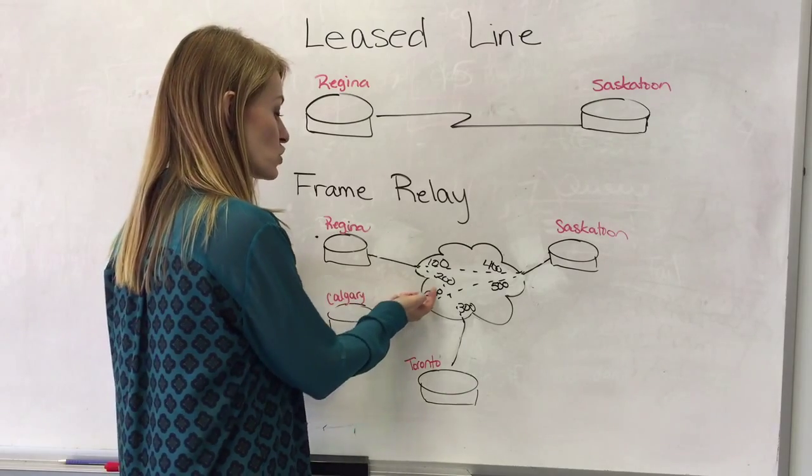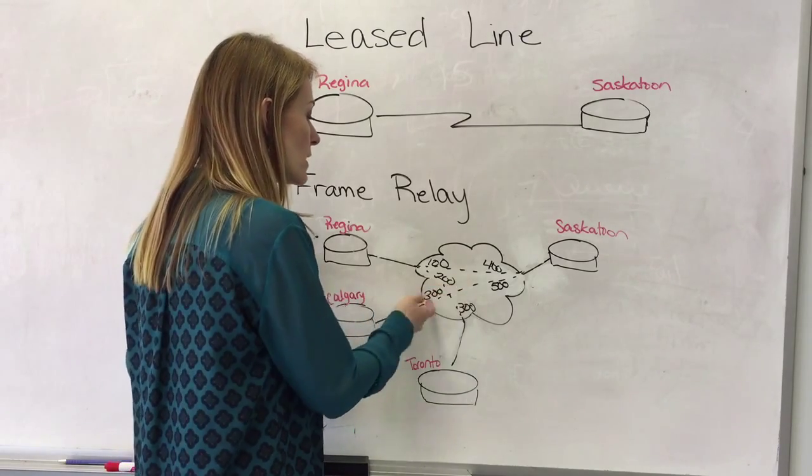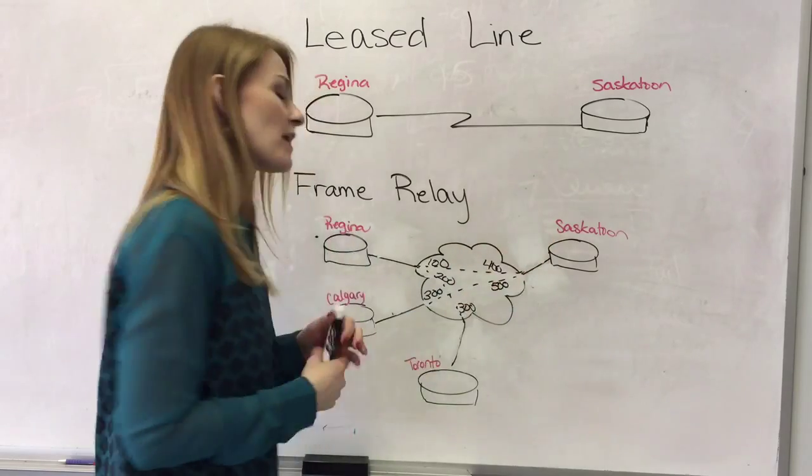If we're in Calgary, sure we're going to start out DLCI 300 but if we're going to Saskatoon it'll come in as 500.